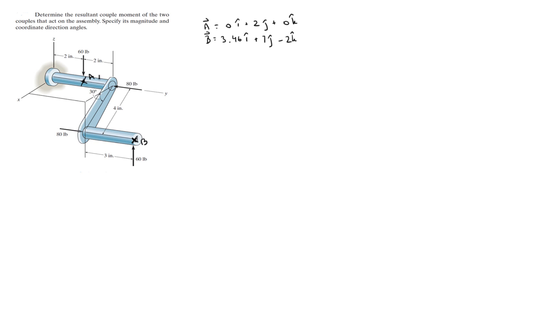The next thing to do is you need to locate the vector that goes from A all the way to B. So the vector that goes from A to B is equal to B minus A, and that is equal to 3.46i plus 5j minus 2k.